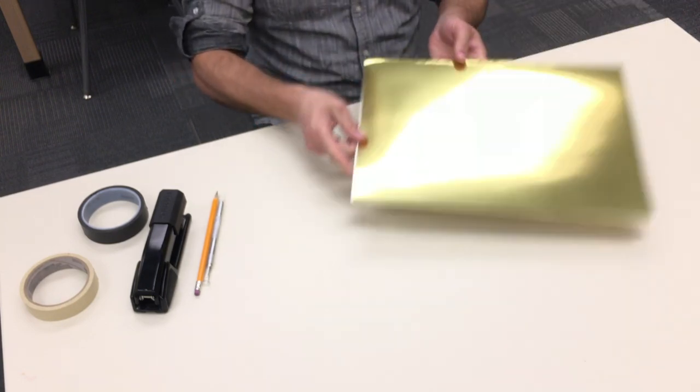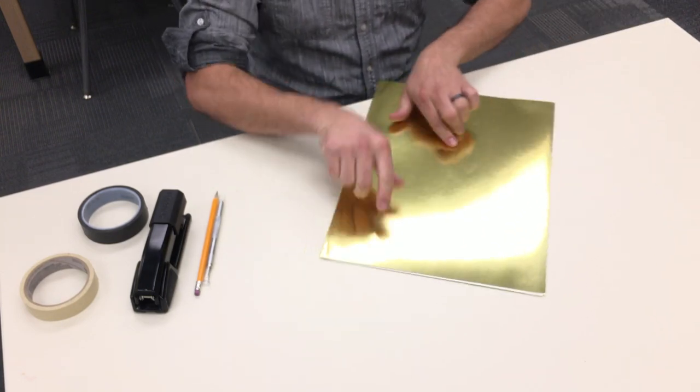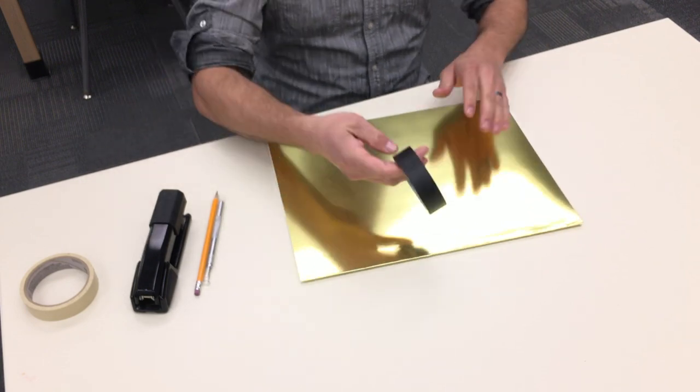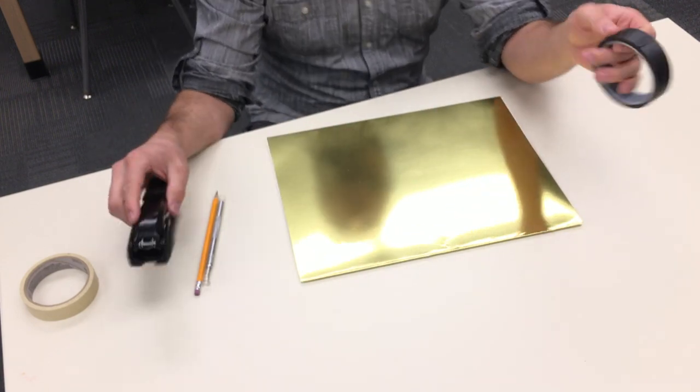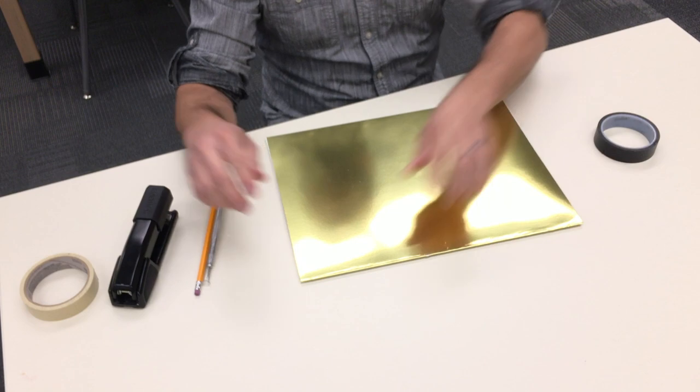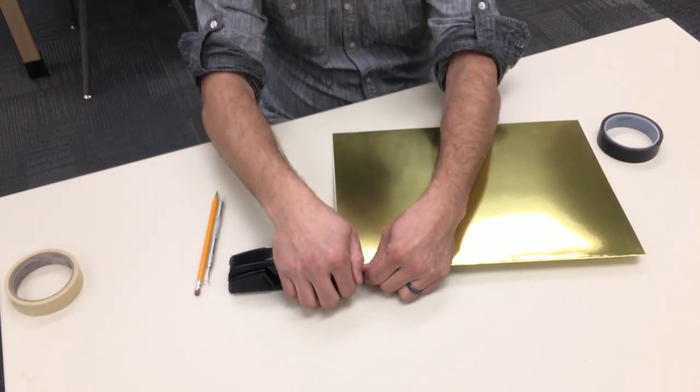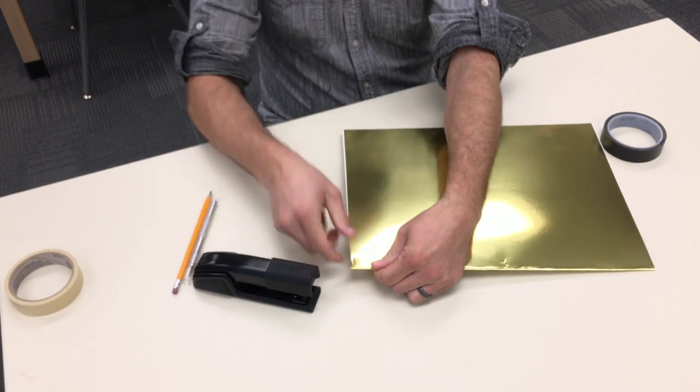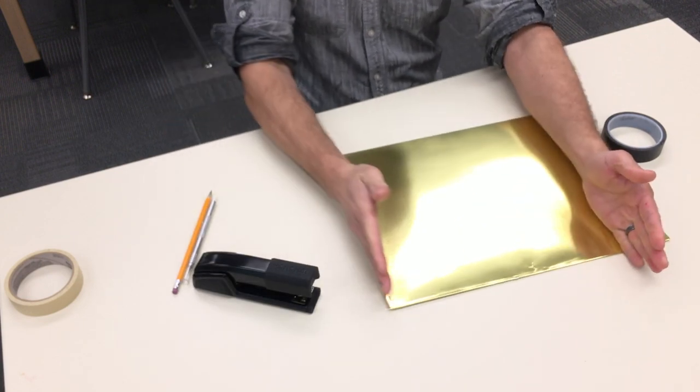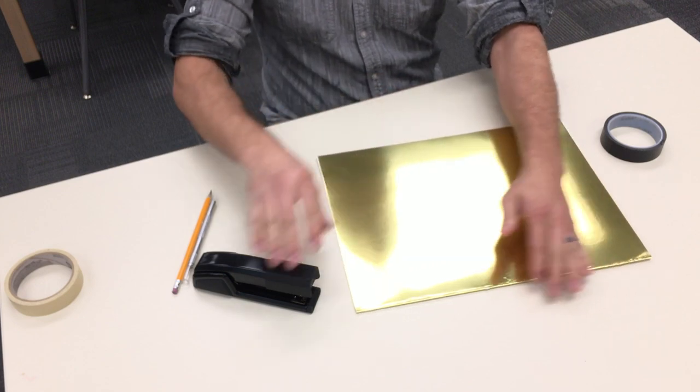Now I want to tape these edges. You can choose to use different colored tape or you can use a stapler. If you use a stapler, make sure all of your staples are close to the edge. You don't want them too far in, otherwise you'll narrow the space that you can put stuff inside.